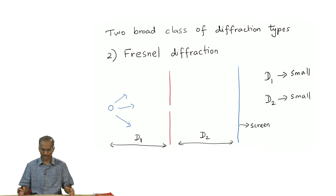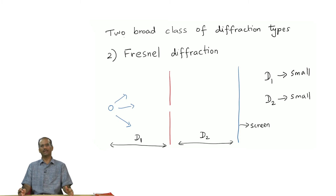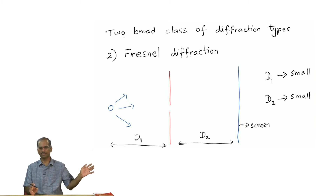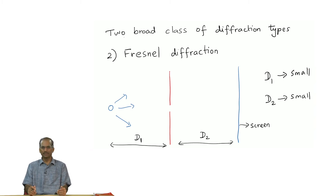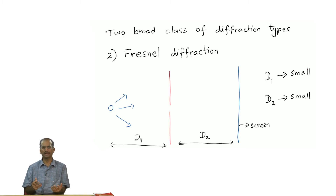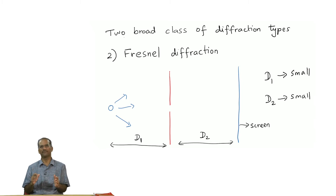The second class of diffraction is Fresnel diffraction. Here, as opposed to the Fraunhofer case, d1 and d2 - which represent the distance from the source and distance to the screen - are not infinite; they are kept reasonably close to the place where diffraction takes place. In this case the waves cannot be assumed to be plane waves, and hence dealing with Fresnel diffraction at a theoretical level is somewhat more difficult than dealing with Fraunhofer diffraction.